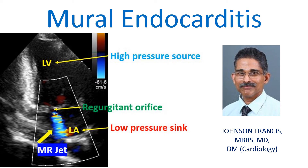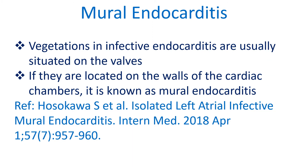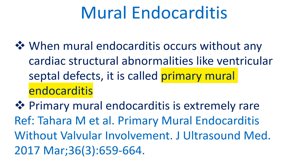Discussion on mural endocarditis. Vegetations in infective endocarditis are usually situated on the walls. If they are located on the walls of the cardiac chamber, it is known as mural endocarditis. When mural endocarditis occurs without any structural abnormalities like ventricular septal defects, it is called primary mural endocarditis.